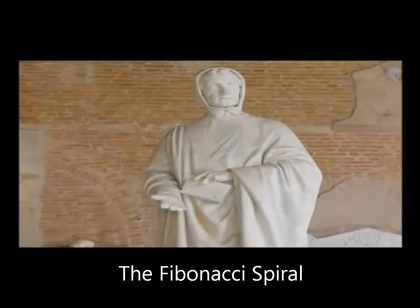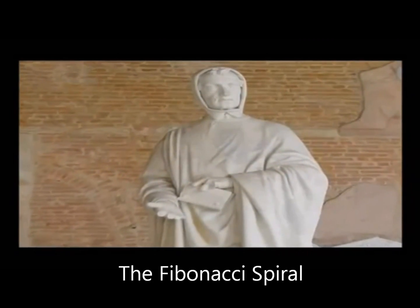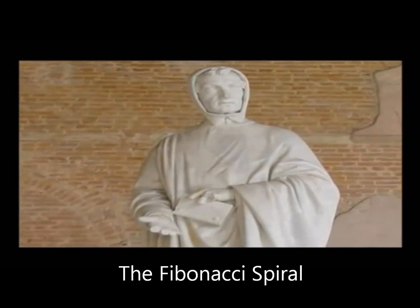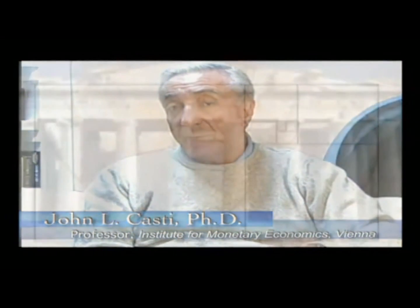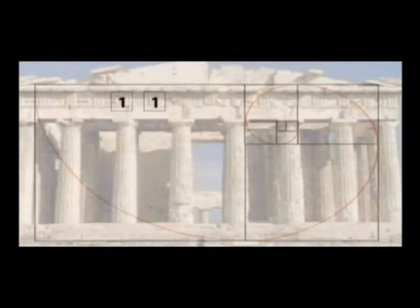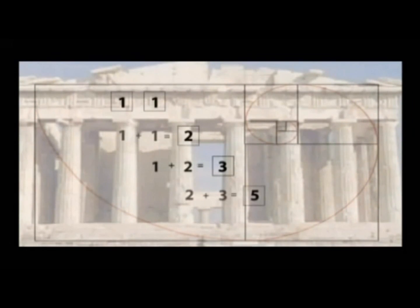In the 13th century, a mathematician named Leonardo Fibonacci discovered an important number sequence — a very simple sequence starting with the number one twice. Each succeeding number in the sequence is the sum of the two preceding ones, so the sequence goes: one, one, two, three, five, and so on.